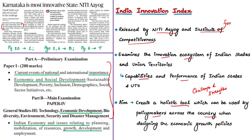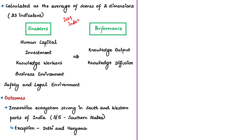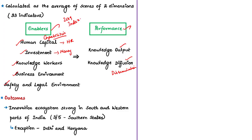The India Innovation Index 2019 is calculated as the average score based on two dimensions: enablers and performance. Enablers — the capabilities of states or union territories — are grouped in five pillars: human capital, investment, knowledge workers, business environment, and safety and legal environment. The performance dimension has two pillars: knowledge output and knowledge diffusion. The index also includes a section on state profiles covering around 33 indicators based on different facets of innovation in India.